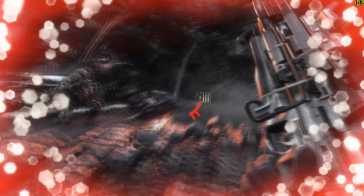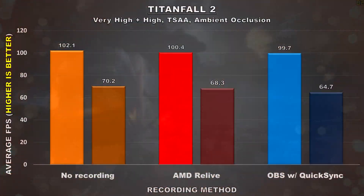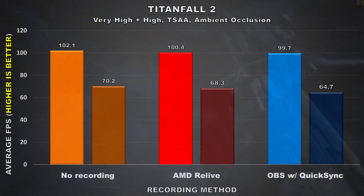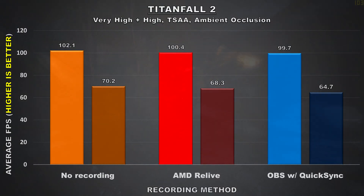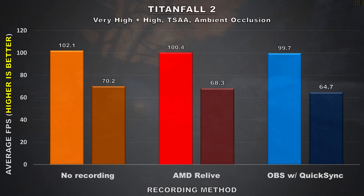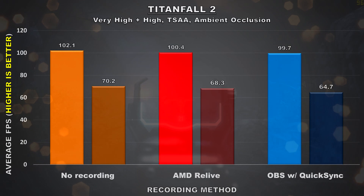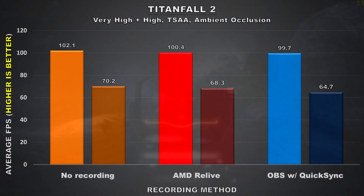Titanfall 2 is next on the list, and the results didn't come as a surprise. There's a 2 FPS difference with AMD Relive and about 3 FPS with OBS. AMD Relive also shows a higher minimum frame rate than OBS, a 4 FPS advantage there. These are small differences and nothing huge, but a win is a win.